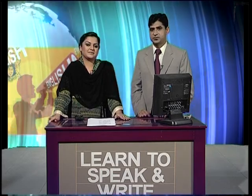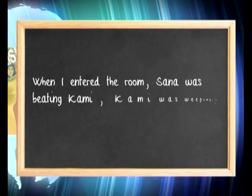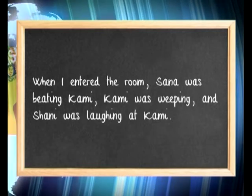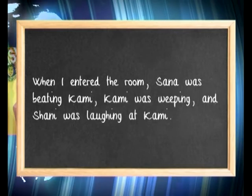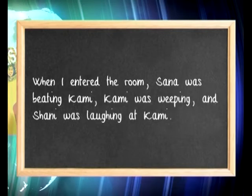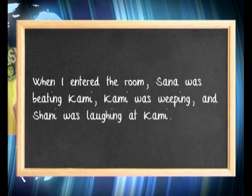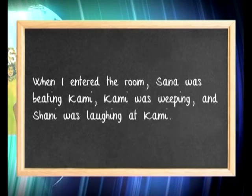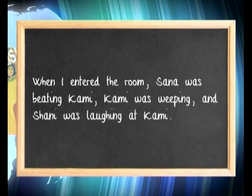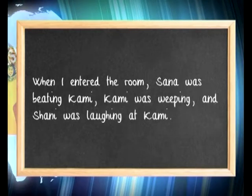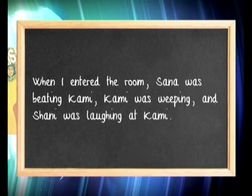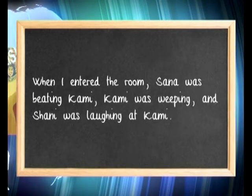This tense is also used to talk about a series of actions going on at the same time in the past. For example: 'When I entered the room, Sana was beating Kami, Kami was weeping, and Shani was laughing at Kami.' Three simultaneous actions were going on. Notice the form: Sana — single subject — was beating; Kami was weeping; Shani was laughing. My entering the room was the interruption; the three actions were already happening simultaneously inside.